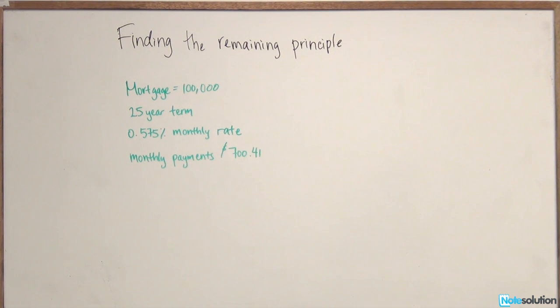So this is an easy level question relating to finding the remaining principal in a mortgage. We have a situation where somebody took out a mortgage for $100,000 on a 25-year amortization term. The mortgage monthly rate is already given to us, 0.575%, and the monthly payments are given to us as well at $740.41. So we have a lot of information. The question here is, if you took out this mortgage after paying for it for two years, how much principal do you have remaining on this mortgage?